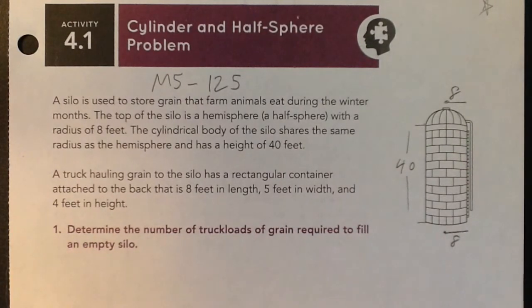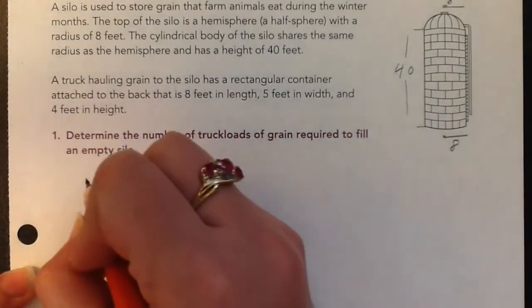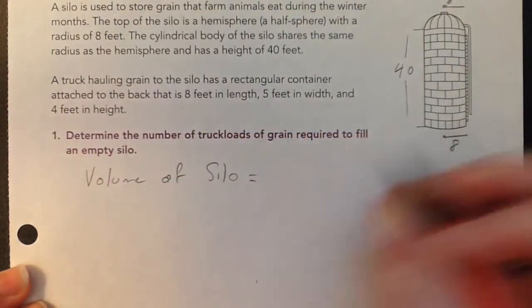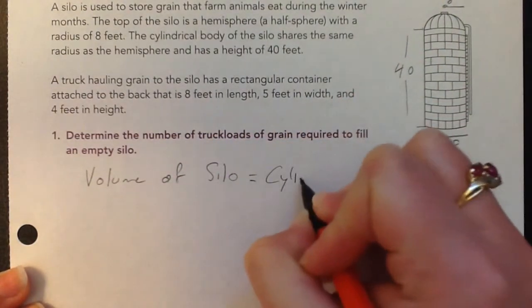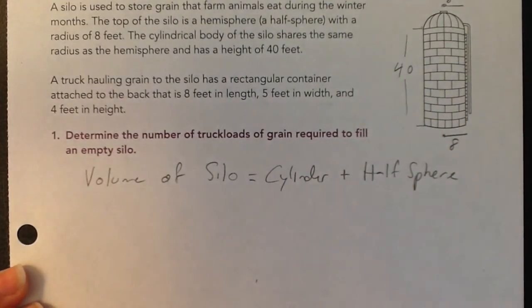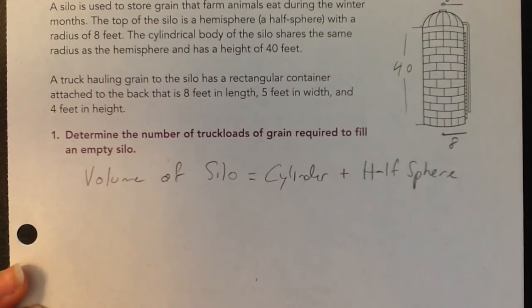So you can probably already tell that this is a multi-step problem. We're going to need to find out the volume of the silo, which is a combination of the cylinder and half a sphere. So we'll need to do both of those volume calculations and add them together to get the total volume.